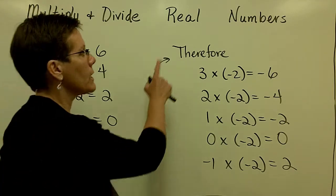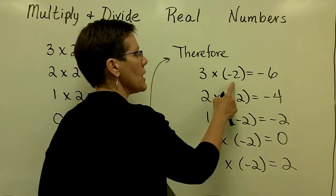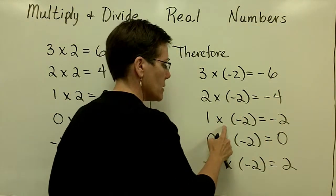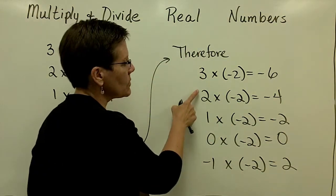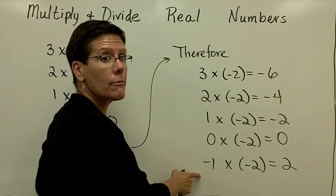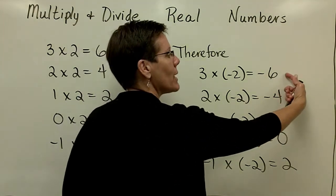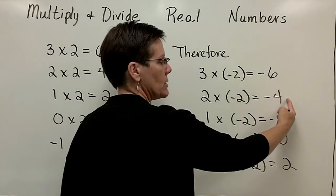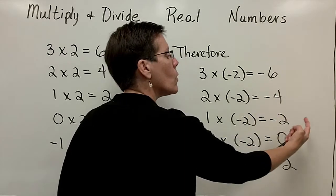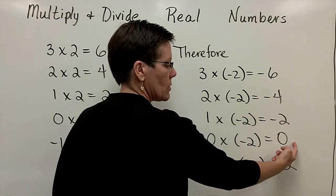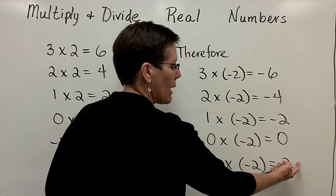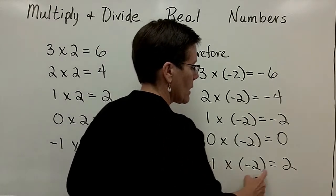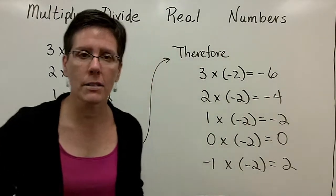Once I knew that, I could go over here and say that since I know a positive times a negative is a negative — and again, positive times a negative is a negative — and I reduce this first factor by 1 every time, I see that my answers are going up by 2 each time. From negative 6, I go up by 2 to negative 4, up by 2, and up by 2 to 0. So I discover that a negative times a negative would, therefore, indeed be a positive because of this pattern.